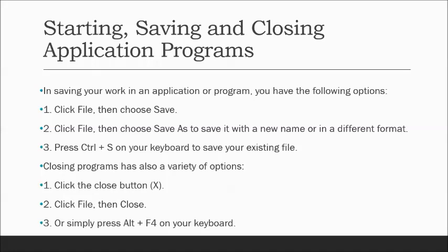To save your work: click File and choose Save, or click File and choose Save As to save with a new name or in a different format. The difference: Save automatically saves changes to the existing file name, while Save As prompts you to rename the file or change its format — for example from .doc to .docx, .txt, or .pdf.